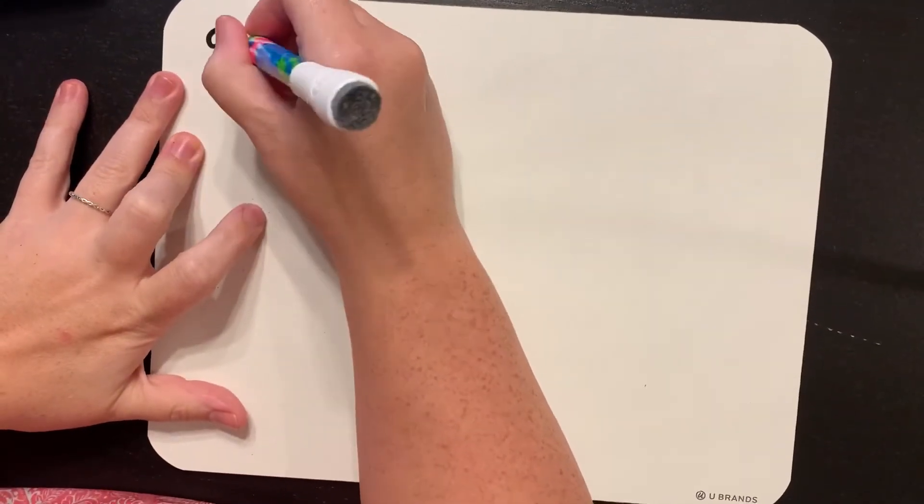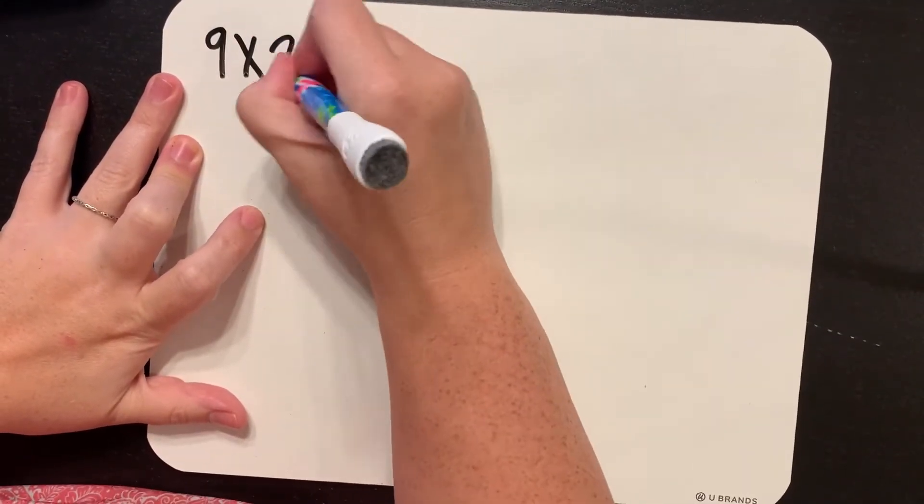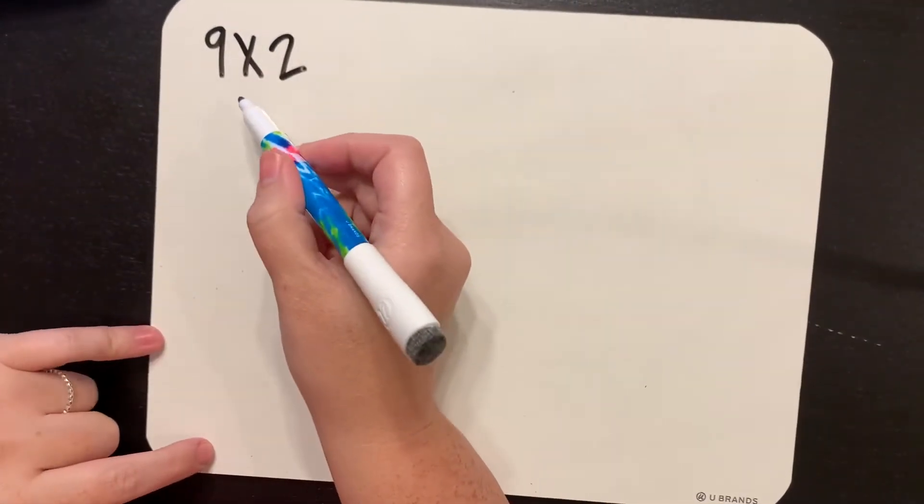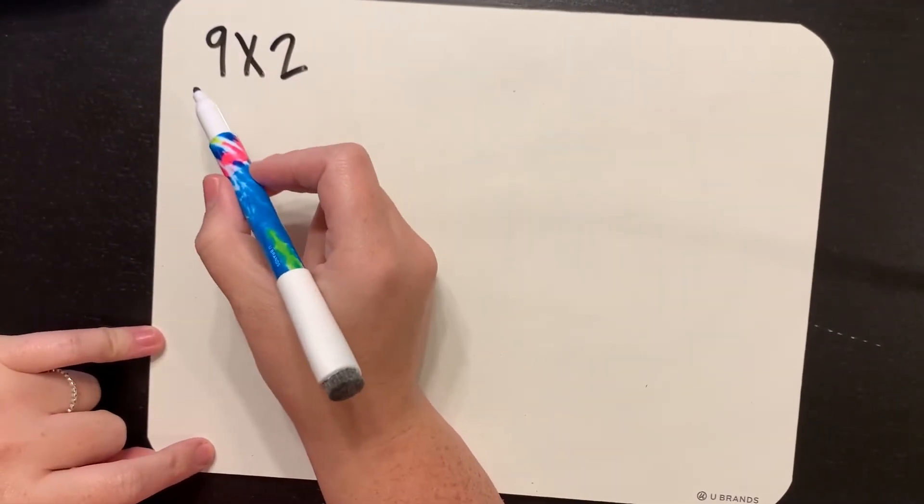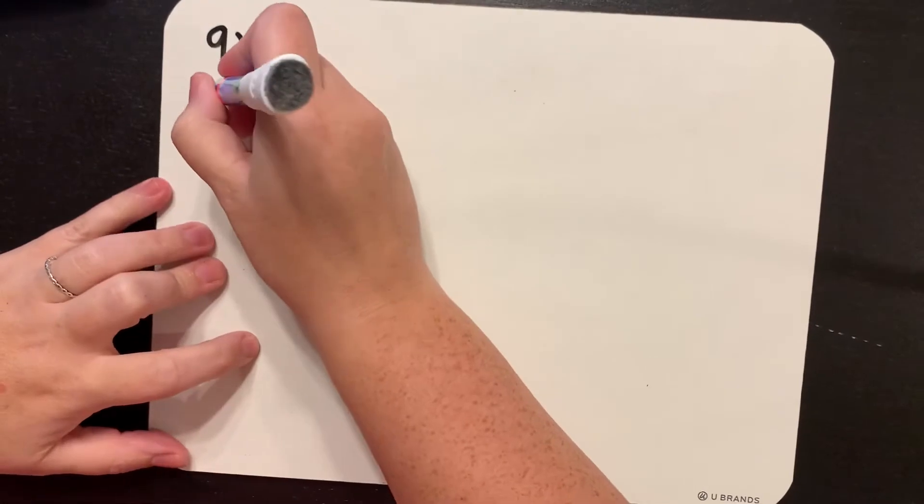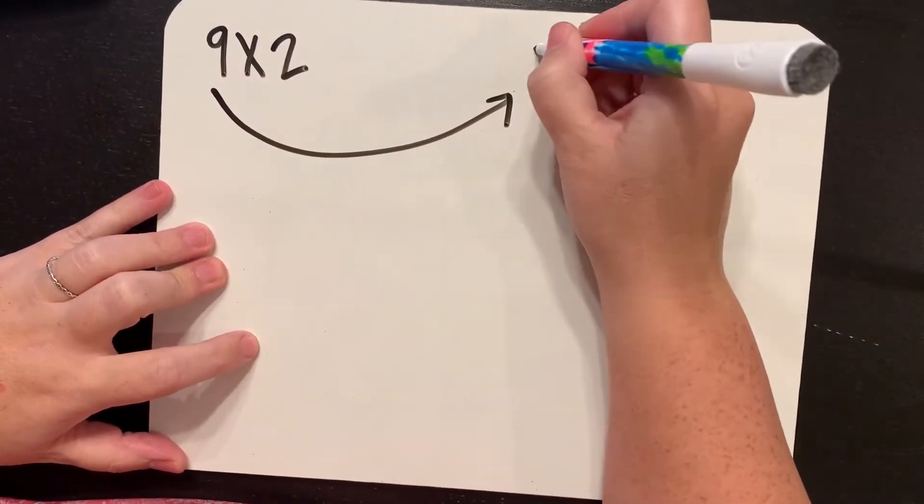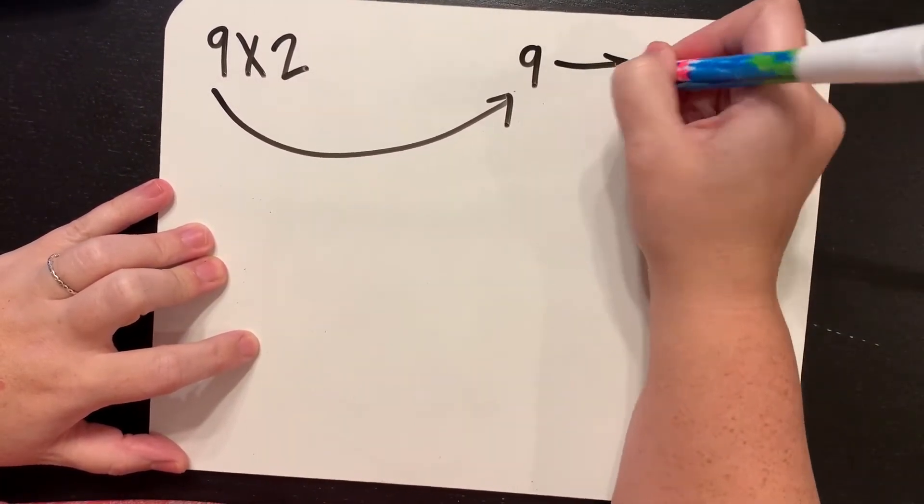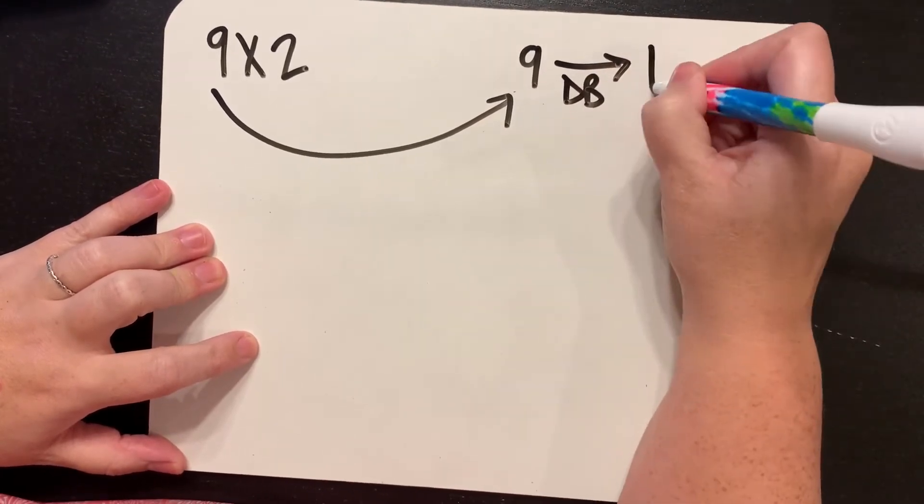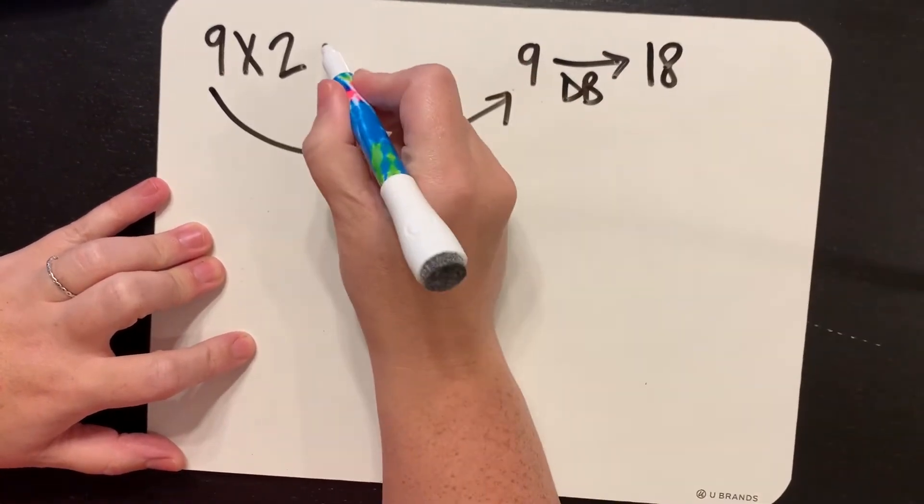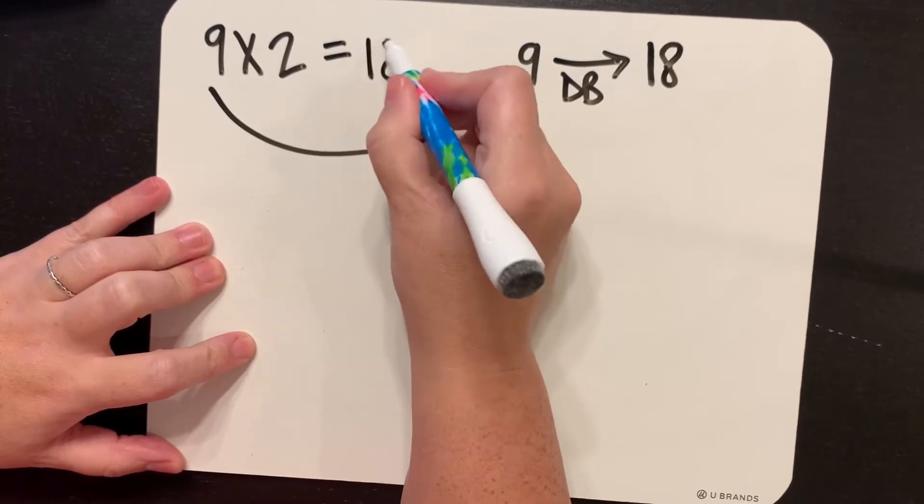Let's start with 9 times 2. Because I'm multiplying by 2, that means I'm going to take my other number, my other factor, which in this case is 9, and I'm going to double it. So 9 doubled gives me 18, and you may recognize that as a math fact.